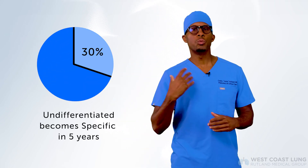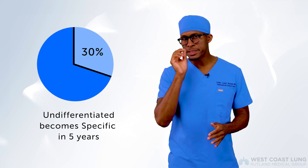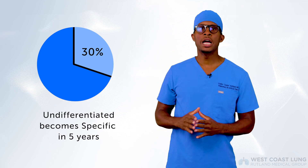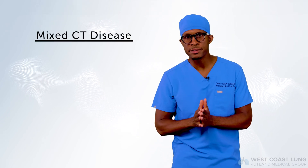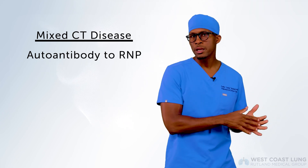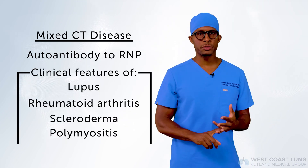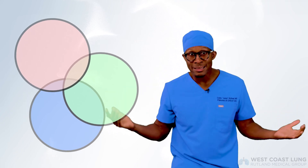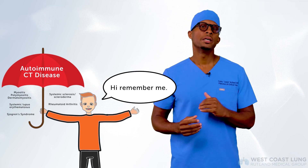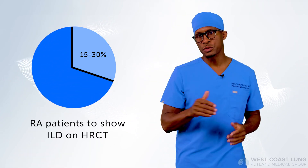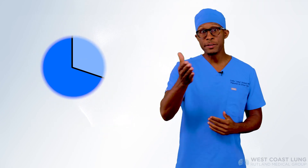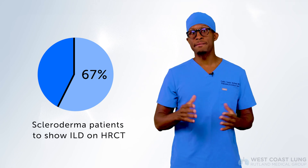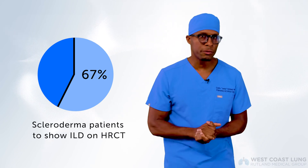Generally speaking, 30% of those diagnosed as undifferentiated connective tissue disease will develop criteria for a specific connective tissue disease within five years. Mixed connective tissue disease means you have an autoantibody to ribonucleoprotein with clinical features of lupus, rheumatoid arthritis, scleroderma, or polymyositis. In rheumatoid arthritis, 15–30% of individuals will have interstitial lung disease on high-resolution CT. In scleroderma, 67% will have ILD findings on chest CT.